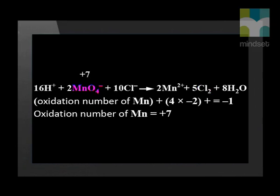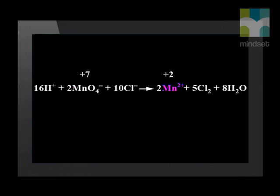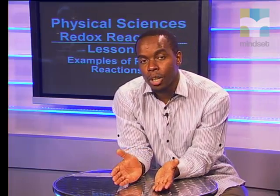We can calculate that the manganese in the permanganate ion has an oxidation number of +7, while on the product side of the reaction, the manganese ion has an oxidation number of +2. So the manganese has changed from +7 to +2. Eventually, when all the permanganate ions have reacted, the purple color disappears. The permanganate has gained electrons and has therefore been reduced.